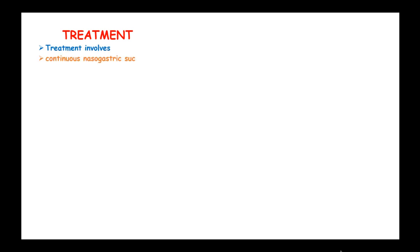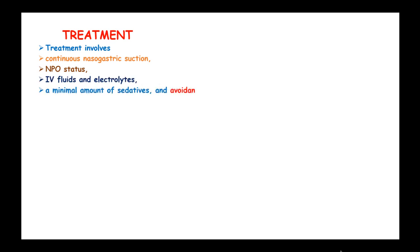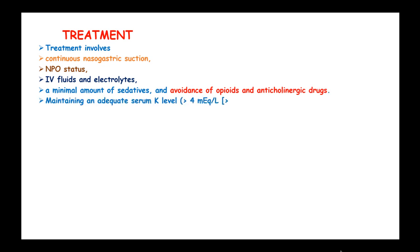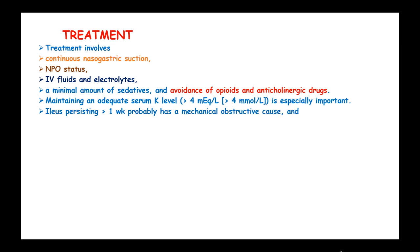Treatment of paralytic ileus involves continuous nasogastric suction, nil by mouth status, intravenous fluids, and electrolytes. A minimum amount of sedatives and avoidance of opiates and anticholinergic drugs is indicated. Maintaining adequate serum potassium levels above 4 mmol per liter is especially important. Ileus persisting for more than one week probably has a mechanical obstructive cause, and laparotomy should be considered in these cases.